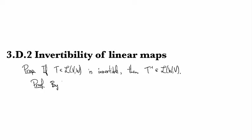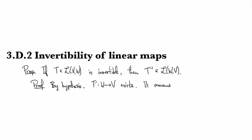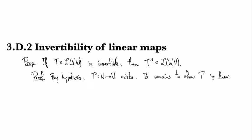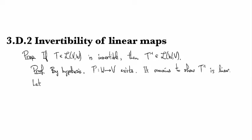So by hypothesis the inverse exists, right? So we're assuming it's invertible, that means the inverse exists. What we have not clarified is the fact that T inverse is also linear. So let's do the usual thing. We'll show that it preserves sums and scalar multiples.